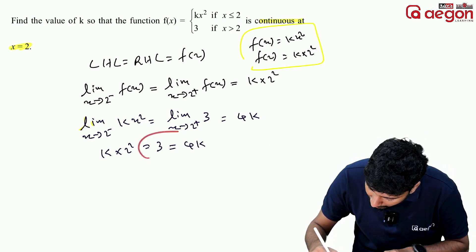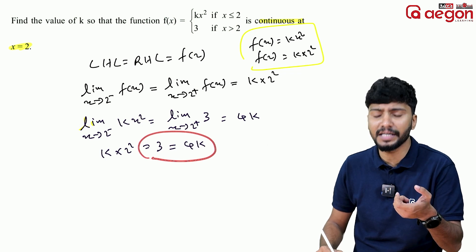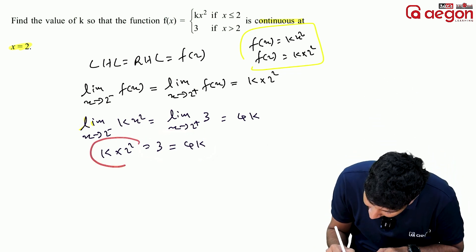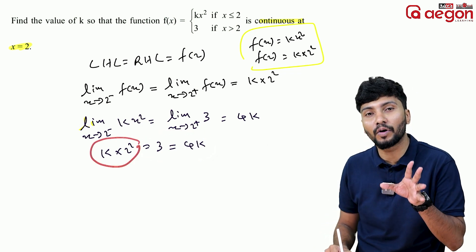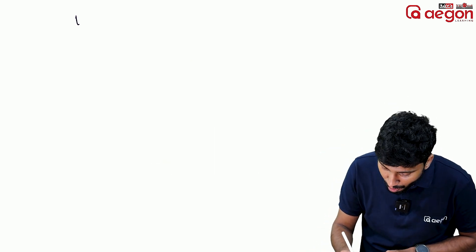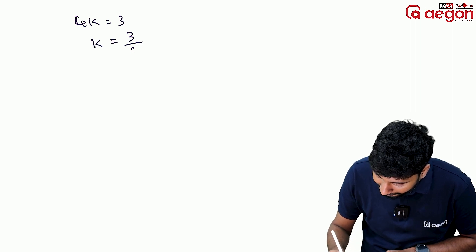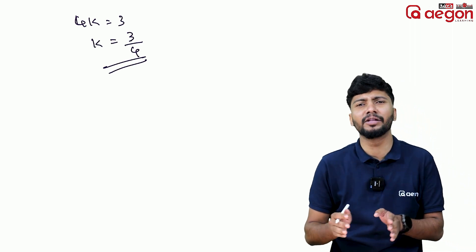From 3 equals 4k, we divide both sides by 4 to get k equals 3 divided by 4. So the value of k is 3/4.